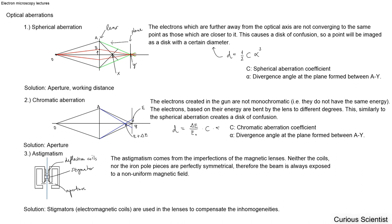What this will cause is that if you look at the plane from the top, instead of having a point, there will be a so-called disk of confusion. So your point — which is basically this point from the source — will be more like a disk.